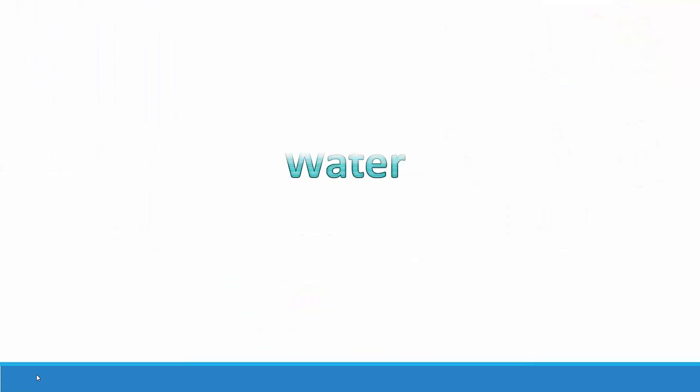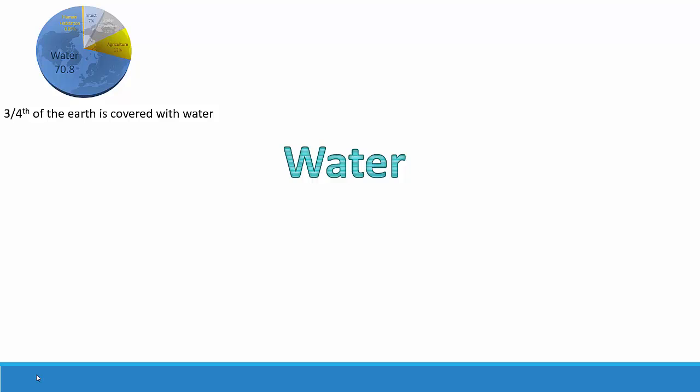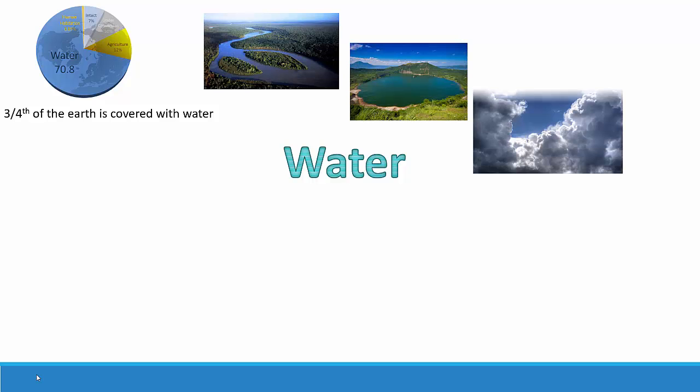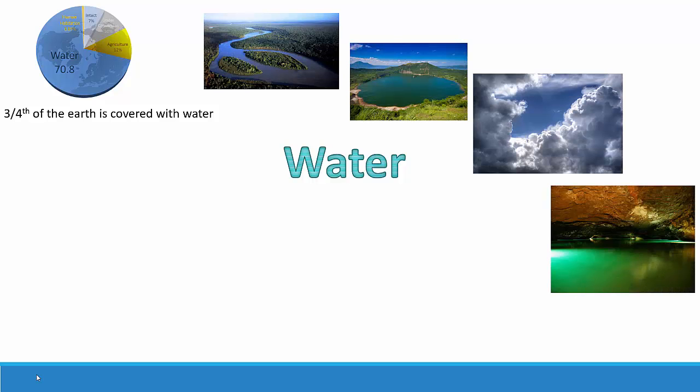Now if we see water, we know that three quarters of the earth is covered by water and only about a little more than 25% is made up of the land masses. The rest of it is all water. So if you see these sources of water — what could be the sources? Oceans, lakes, rivers, underground water, as well as sky, where water is present.